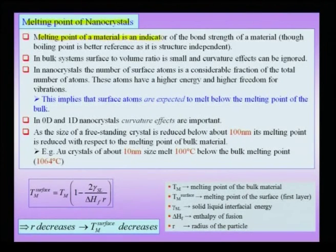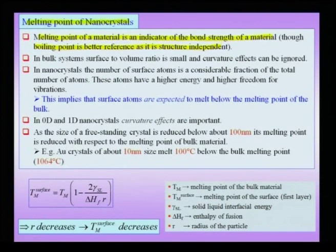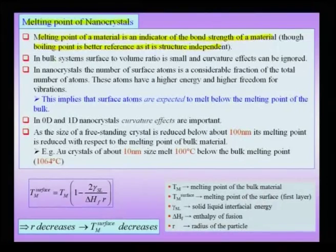The melting point of a material is an indicator of the bond strength of the material, though the boiling point is a better reference as it is structure independent. In the solid state you have various kinds of phases possible like the BCC crystal or the FCC crystal, and this would affect the melting point. But the boiling point, from the liquid state to the gaseous state, is a better indicator of bond strength. Nevertheless, the melting point also gives some indication of bond strength. In bulk systems the surface-to-volume ratio is small and curvature effects can be ignored, which essentially implies we can talk about a single number known as the bulk melting point.